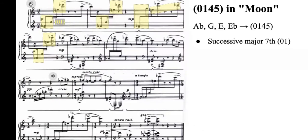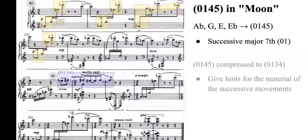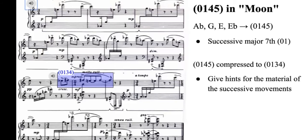Such figuration is repeated and further combined with some free composing elements before it is compressed into an 0134 chord in the middle of the piece, highlighted in purple, which gives hints for the material of the next movement.